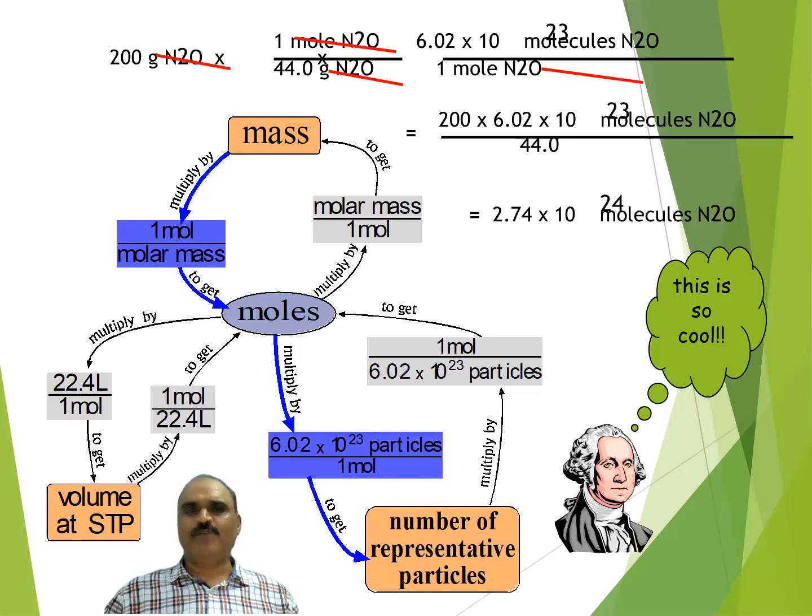200 gram N2O. First, we are coming here by multiplying it with one mole N2O upon molar mass of N2O 44 gram of N2O. Then from here, we are coming down at this point by multiplying with Avogadro's number of particles, here molecules, upon one mole. So gram N2O cancelled out, mole N2O, mole N2O cancelled out.